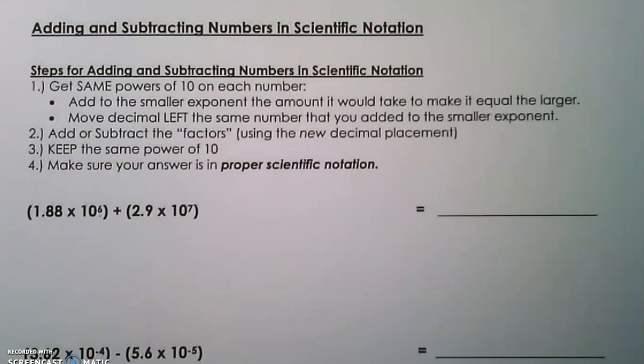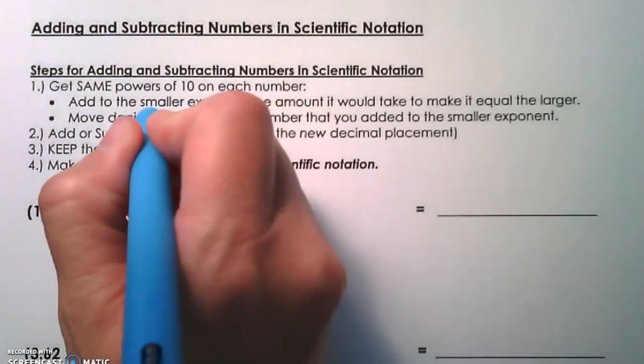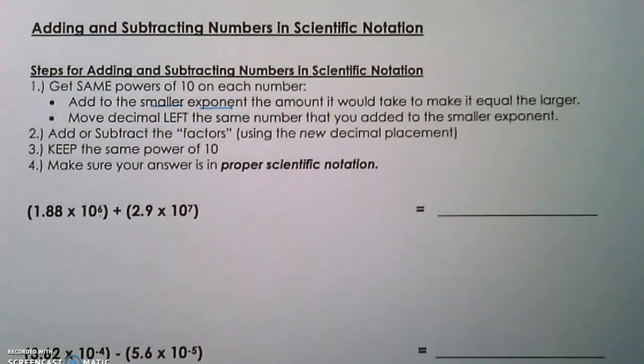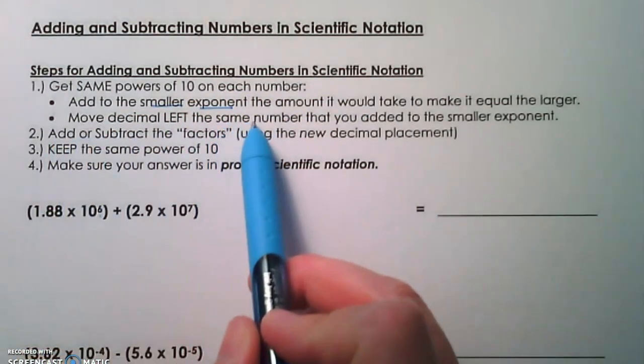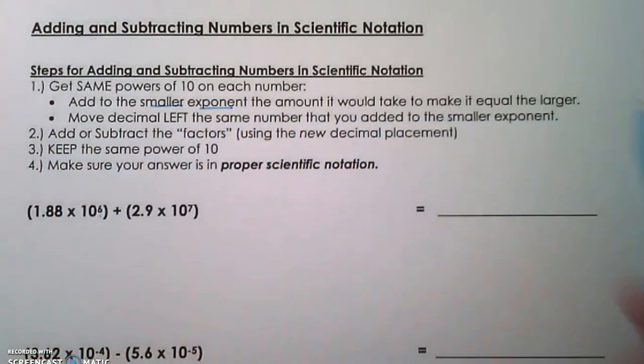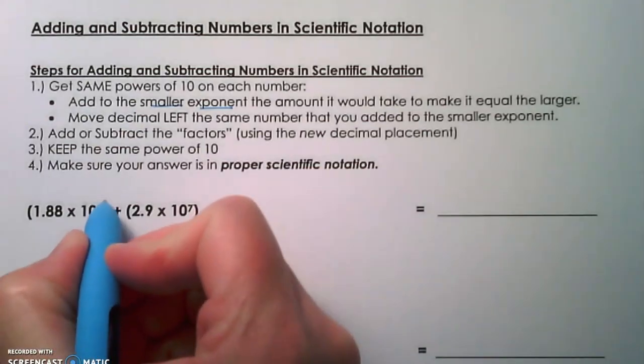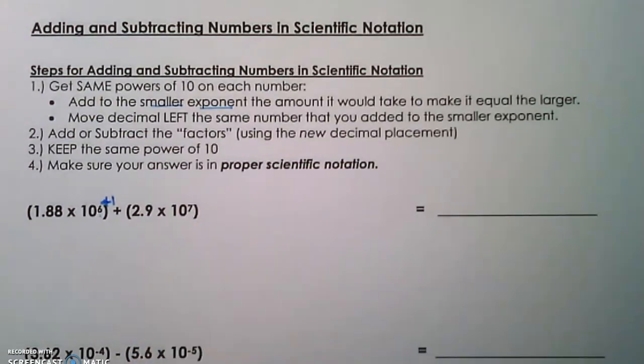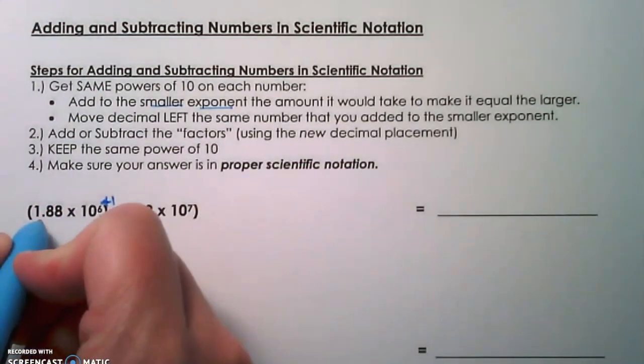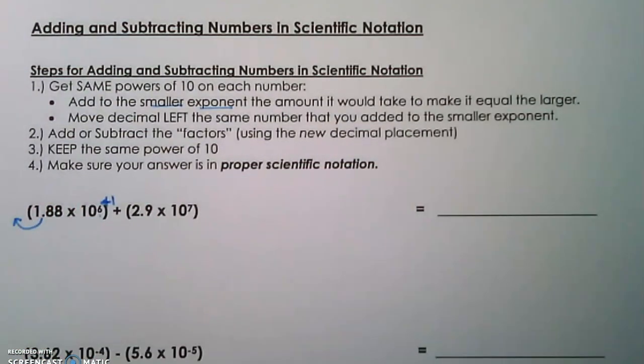Step one says to get the same powers of 10 on each number, starting with the smaller exponent. Add to the smaller exponent the amount it would take to make it equal the larger one. So I'm going to add one to six to make it equal seven, the larger exponent, and move the decimal left the same number of times I added. So I added one, so I moved my decimal left one place. My new factor in the first number becomes 0.188.